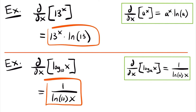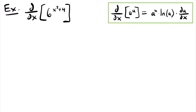Alright, let's look at some more examples. Next we have the derivative of 6 to the power of x cubed plus 4. In order to take the derivative of this function, we are going to need to use a variation of the derivative rule from before. In this case, we have that the derivative of a to the power of u, where u is a function of x, is equal to a to the power of u times the natural log of a times the derivative of u.